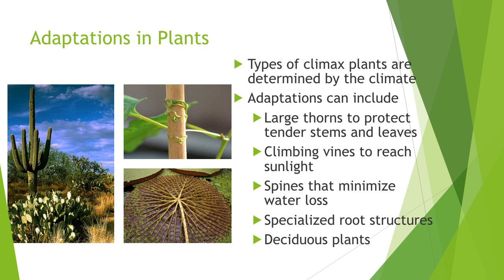Adaptations of plants are also evident in biomes. Some plants have large thorns to protect their stems and leaves. There are climbing vines in tropical rainforests so that plants can reach sunlight. There is also what's called a climax plant, similar to index animals — climax plants are determined by the climate of the biome.